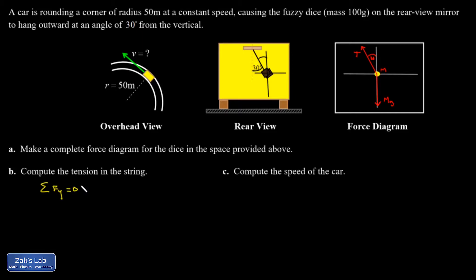Otherwise, there would be a y acceleration, but there isn't. And that means all the upward stuff has to balance the downward stuff. So I can write it like this. Upward forces better sum to the same number as downward forces.